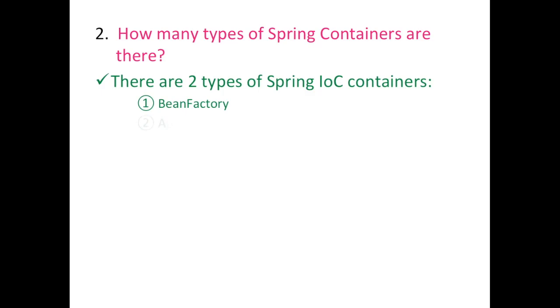How many types of Spring containers are there? There are two types of Spring IoC containers: the first one is the Bean Factory, and the second one is the Application Context.